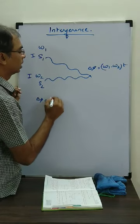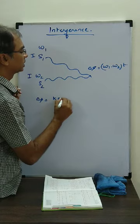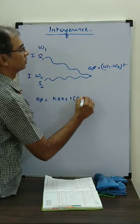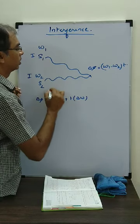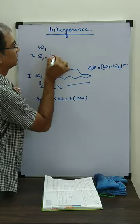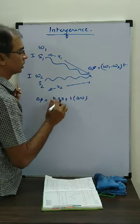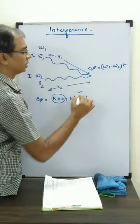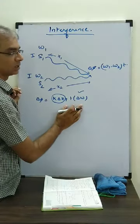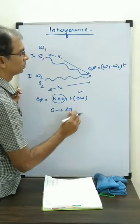Here phase difference is going to be k delta x plus T into delta omega. Now k delta x is fixed because the positions x1 and x2 are fixed. But the T into delta omega part is going to change. And because of this, this phase difference keeps on changing from 0 to 2 pi.